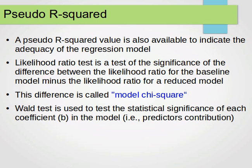The likelihood ratio test is a test of the significance of the difference between the likelihood ratio of the baseline model minus the likelihood ratio of a reduced model. This difference is called the model chi-square.